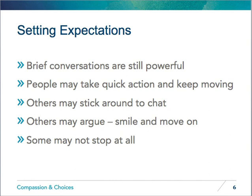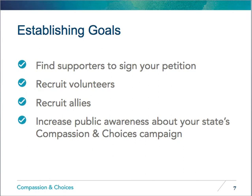Here are some basic goals to keep in mind when you're collecting signatures, tabling, or canvassing. Find supporters who will sign your petition in your neighborhood, at farmers markets, in front of grocery stores, at health fairs, etc. Identify and recruit possible volunteers to help on the campaign. Identify and recruit allies — for example, influential community members or medical or legislative champions for medical aid in dying. And increase public awareness of your state's Compassion and Choices efforts.